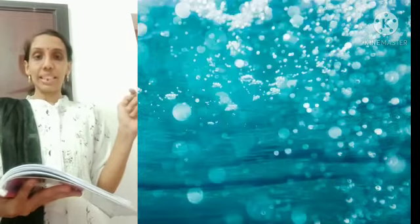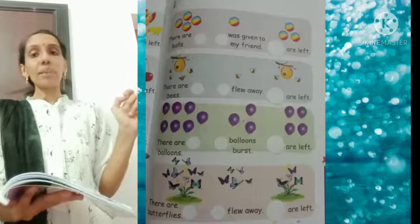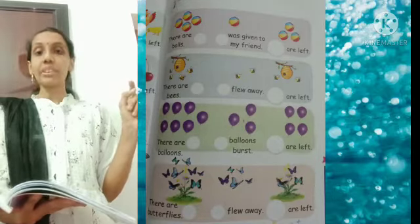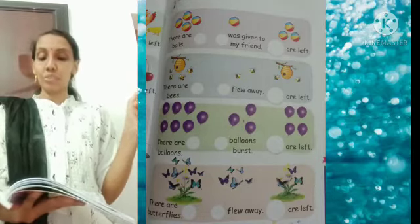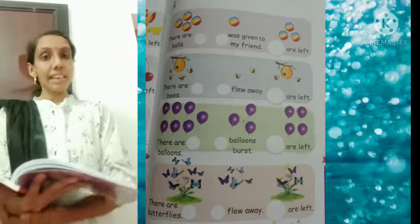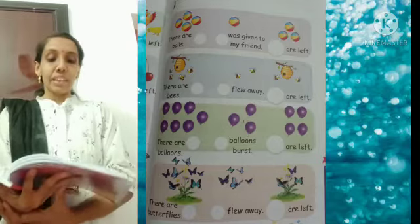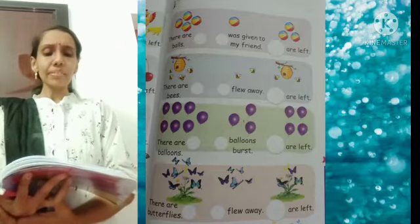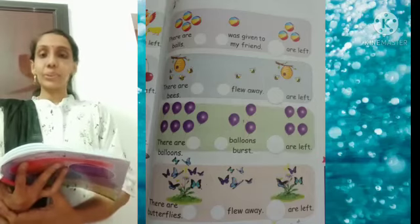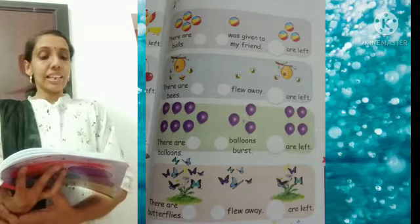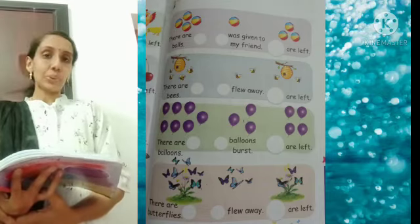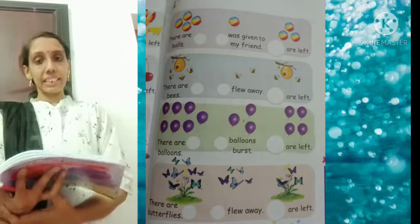Look at the next picture. How many balloons are there? One, two, three, four, five, six, seven. Seven balloons. And how many balloons burst? One, two, three. And how many are left? One, two, three, four. Four.